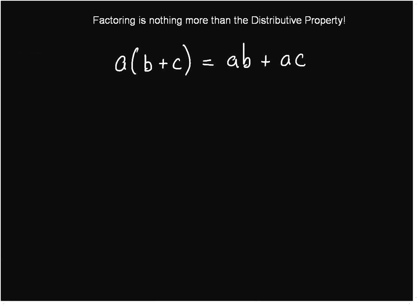So now, here is the distributive property, and factoring is nothing more than the distributive property. If we distribute A to both B and C, then we simply get the product of A and B, and the product of A and C, and we add them together according to this sign. That's the distributive property.